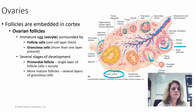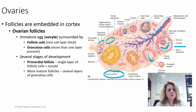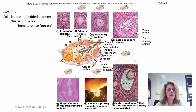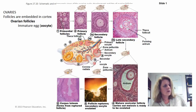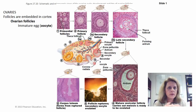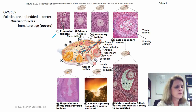If there's no pregnancy, the corpus luteum becomes scar tissue called a corpus albicans. You should already know the differences between primary and secondary oocytes, and primordial, primary, and secondary follicles from your oogenesis lecture. On a histology slide of the ovary, primordial follicles are small and usually found grouped together.